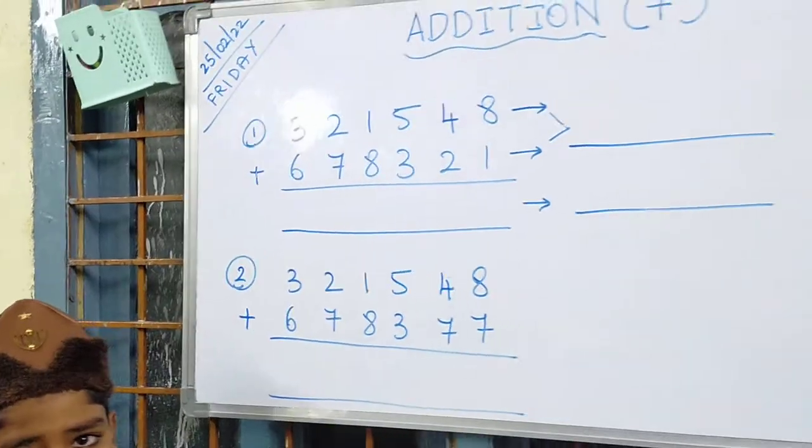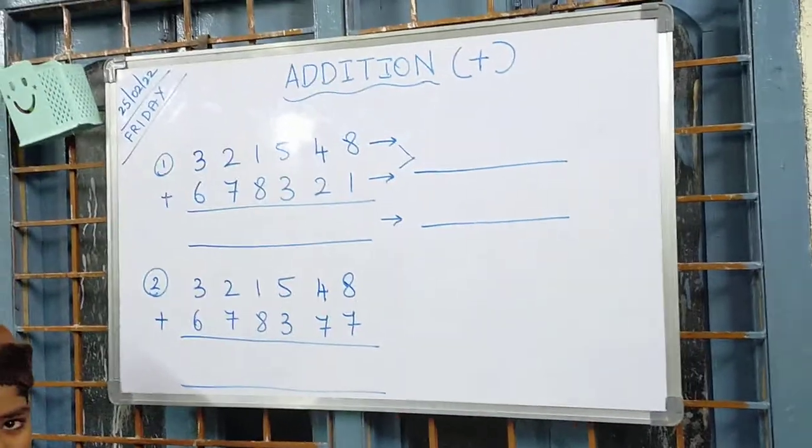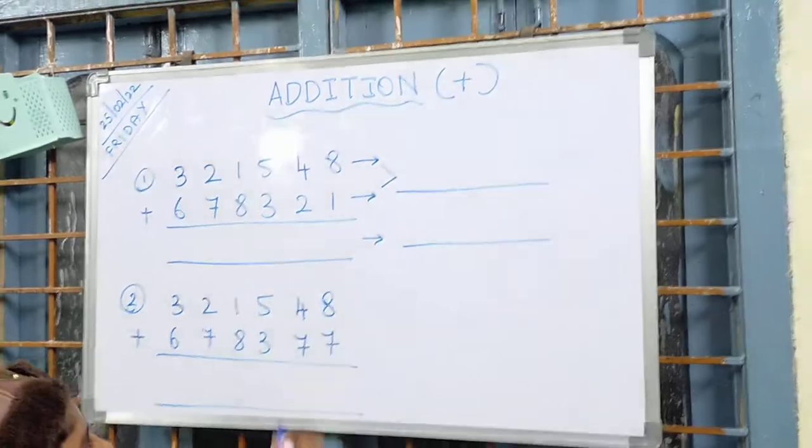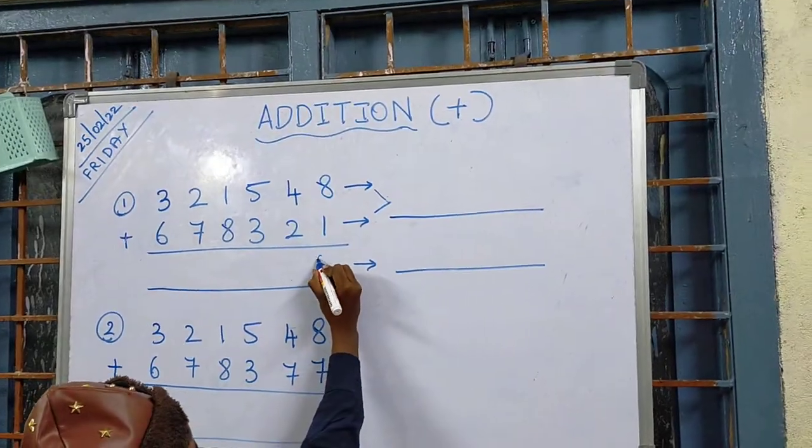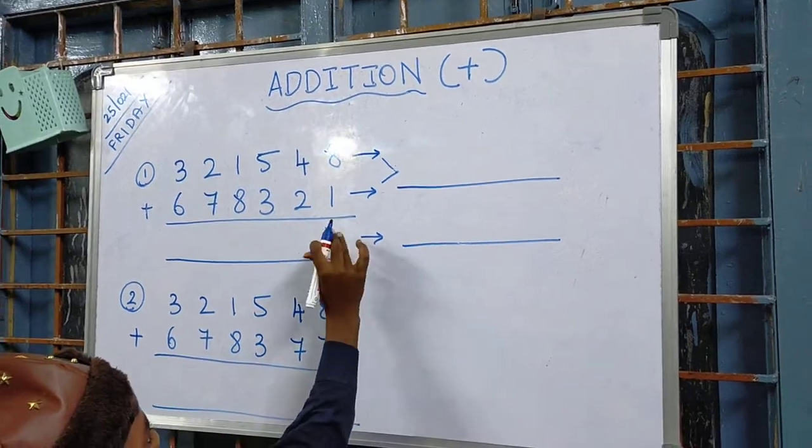Plus. Very good. So addition is denoted by the symbol plus. Fine. So now you will be able to do it. One sum is addition without carryover and the other sum is with carryover. All the best. Do it correctly.